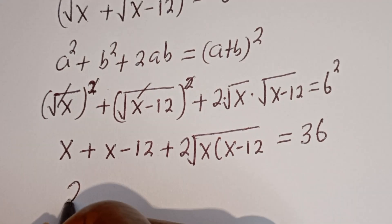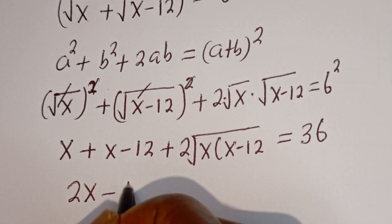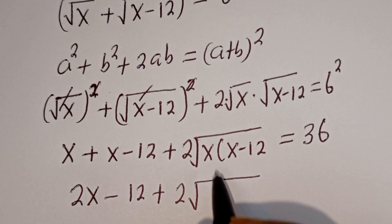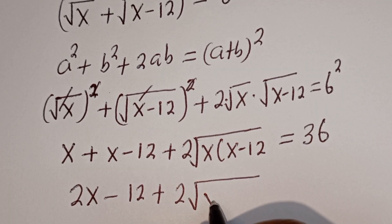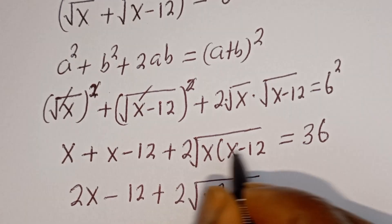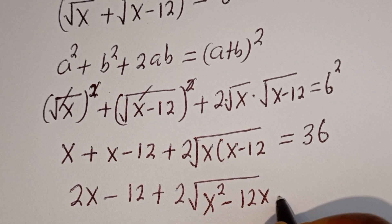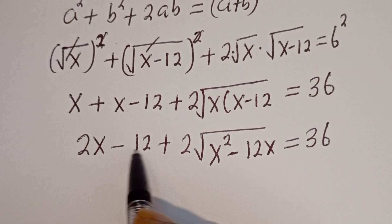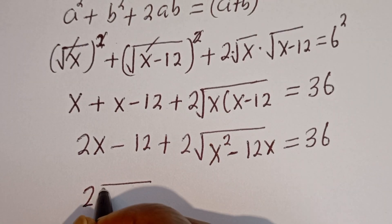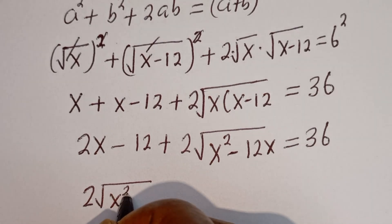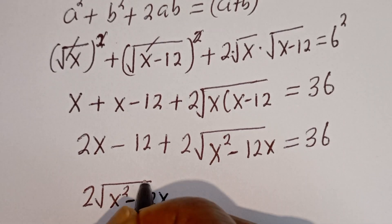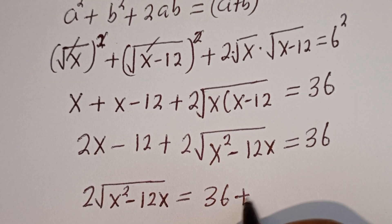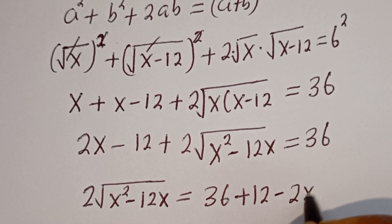Then x plus x gives us 2x minus 12 plus 2 times square root of x squared minus 12x is equal to 36. Let's take the 2x minus 12 to the right side: we have 2 times square root of x squared minus 12x is equal to 36 plus 12 minus 2x.